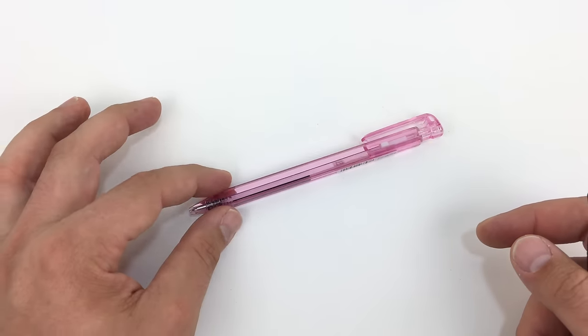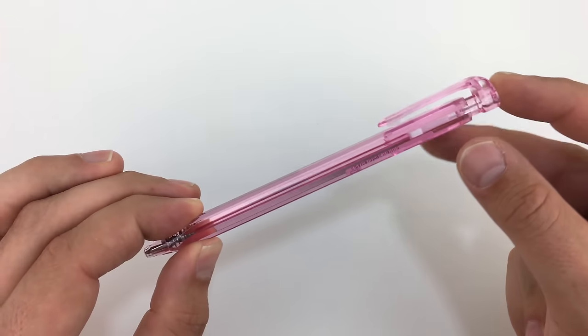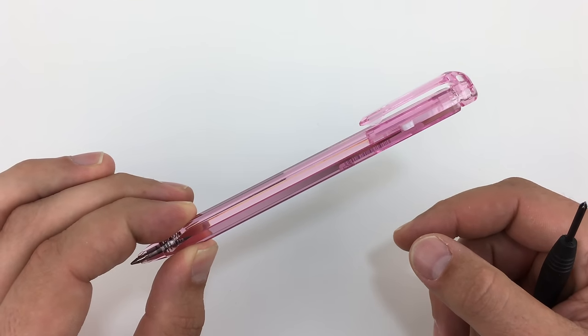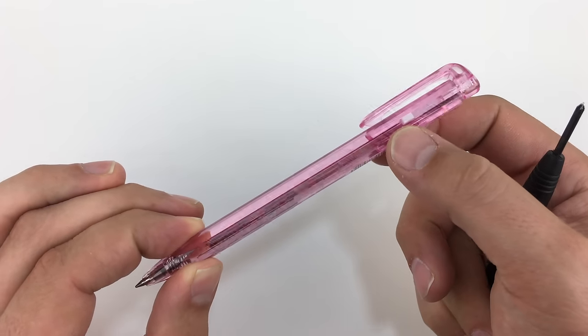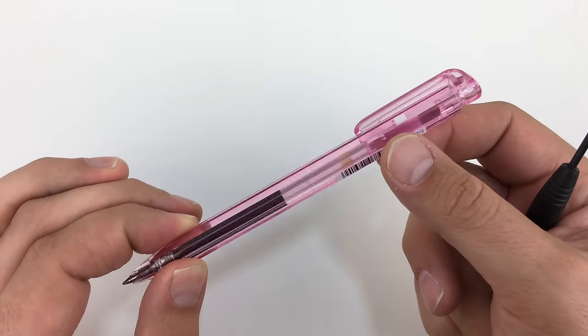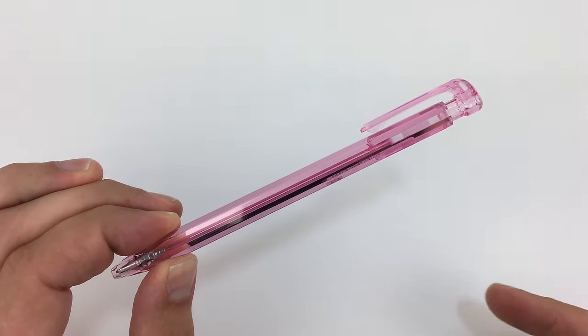The way you extend the tip on this pen is to push down on the top—that's normal. The way you retract the tip though is to push this little white button, this little white lever that you can see sticking out there. So I'm going to push that and the pen retracts.